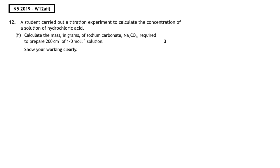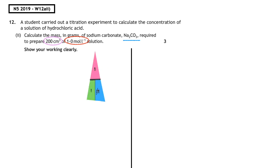This question is from the National 5 2019 written paper, question 12a part 2. A student carried out a titration experiment to calculate the concentration of a solution of hydrochloric acid. Calculate the mass in grams of sodium carbonate — formula Na₂CO₃ — required to prepare 200 centimeters cubed of a one mole per liter solution. Show your working clearly.